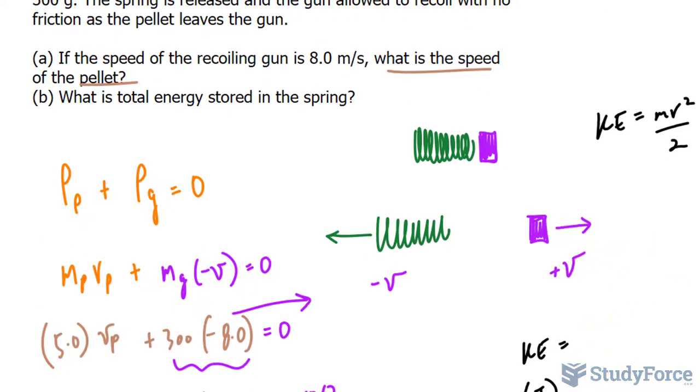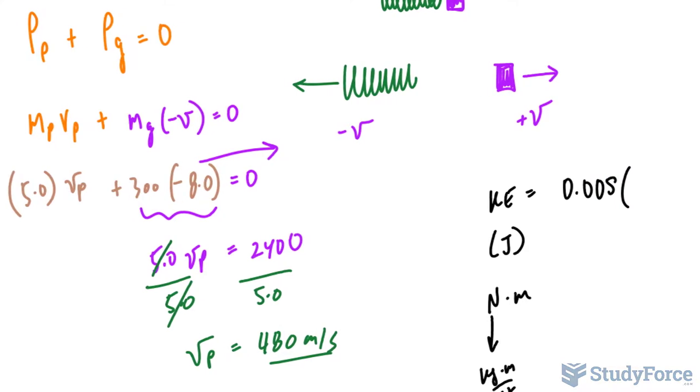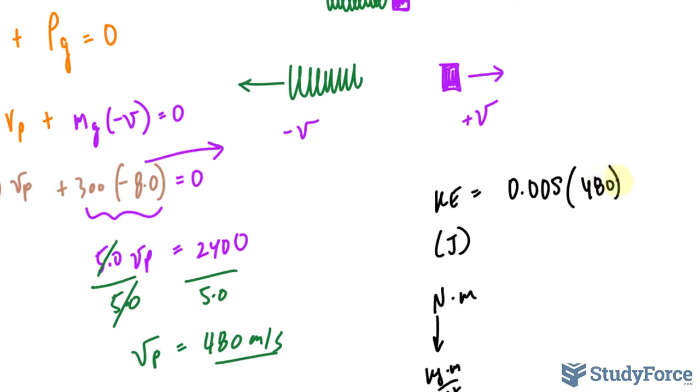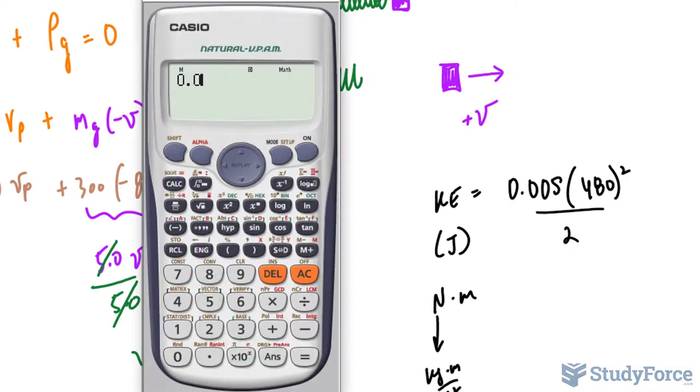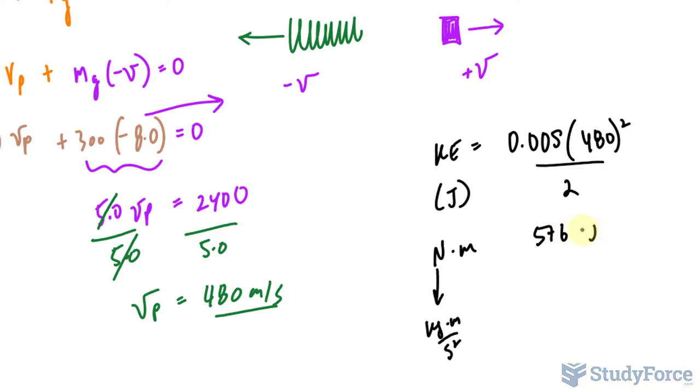Mass of this pellet is 5 grams. And in kilograms, that's 0.005 multiplied with speed of 480 raised to the power of 2 over 2. Using our calculator, 0.005 times 480 raised to the power of 2 over 2, 576. And the units here are in joules.